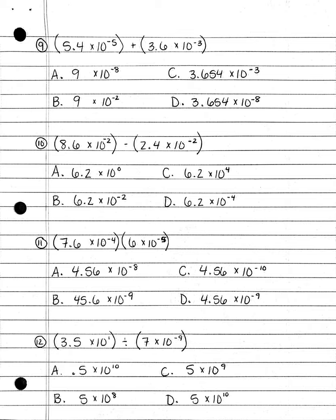Number 12. 3.5 times 10 to the first power divided by 7 times 10 to the negative ninth power: A. 0.5 times 10 to the tenth power; B. 5 times 10 to the eighth power; C. 5 times 10 to the ninth power; or D. 5 times 10 to the tenth power.